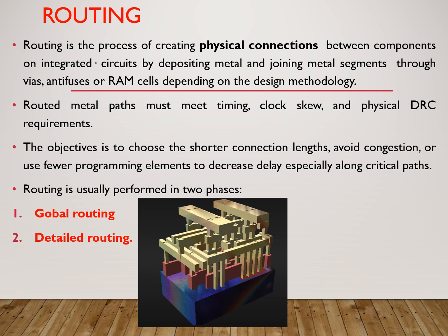DRC means Design Rules Checker. The main objective of any routing is to choose a shorter connection length and to avoid congestion. Congestion means the required resource must be less than the available resource. We also have to use very few programmable elements between two components in order to reduce delay, especially in the critical path. The third objective is to use very few programmable switches to connect between two components to reduce delay.